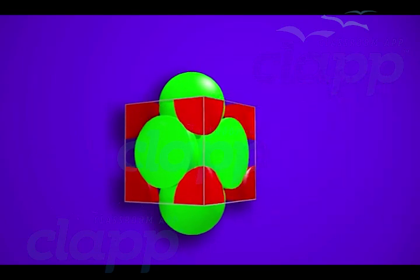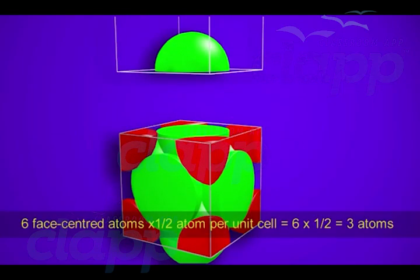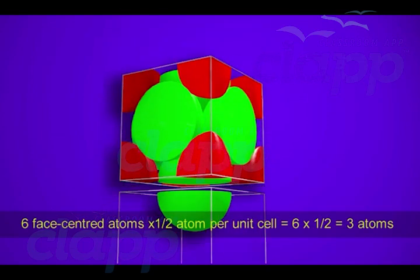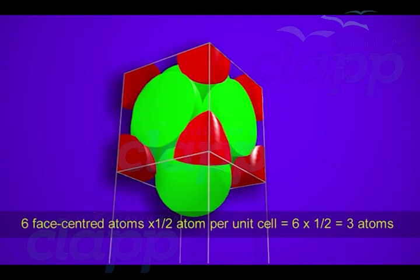So the number of atoms from face centers is equal to 6 face-centered atoms times 1/2 atom per unit cell, which equals 3 atoms.